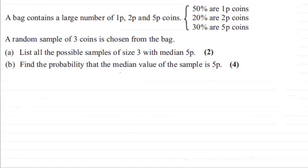Hi there. Now for this question we're given that a bag contains a large number of 1p, 2p and 5p coins and the breakdown is that 50% are 1p coins, 20% are 2p coins and 30% are 5p coins.